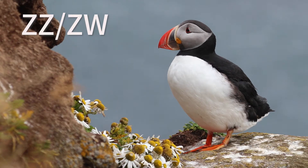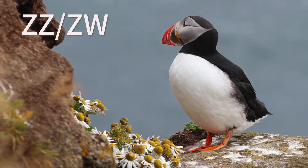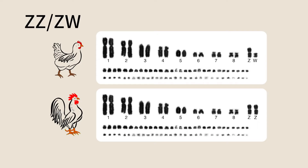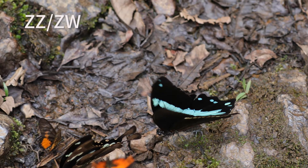In birds, as well as some reptiles and amphibians, there is an opposite system called ZW. Here, the female has two different sex chromosomes called Z and W. Males, in contrast, have only Z chromosomes. Eggs can either have a Z or W chromosome, while all sperm have a Z chromosome. Therefore, in birds, the sex is determined by the mother. This mechanism can also be found in butterflies.